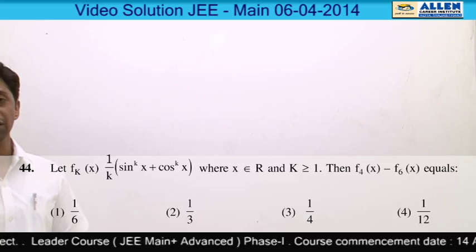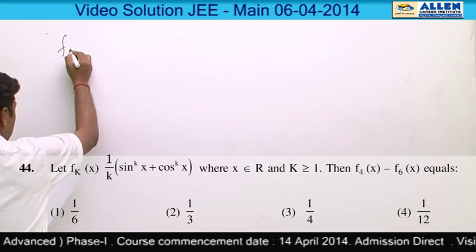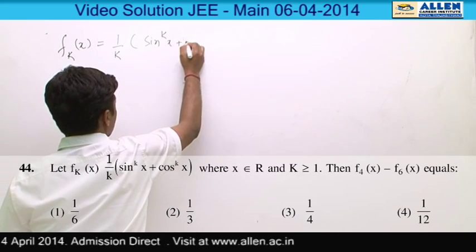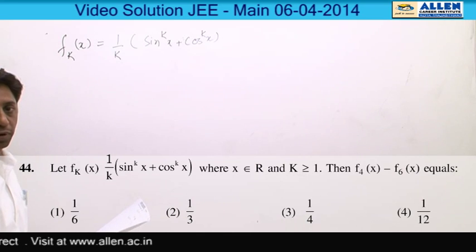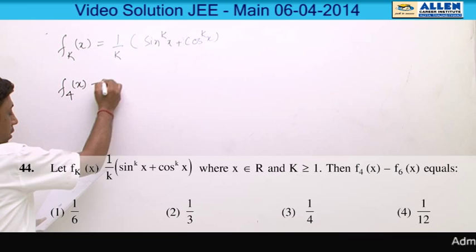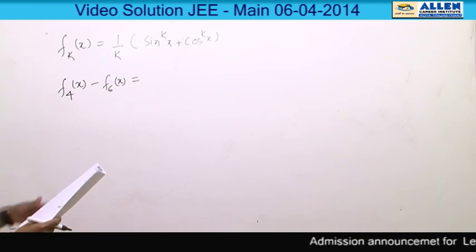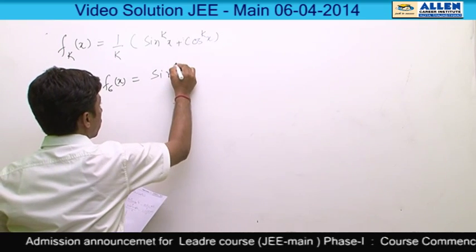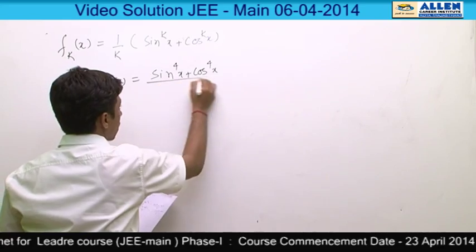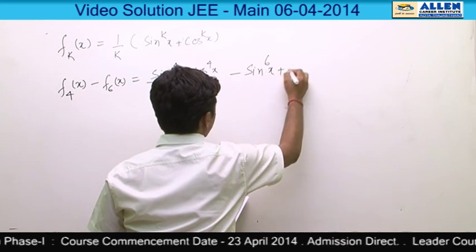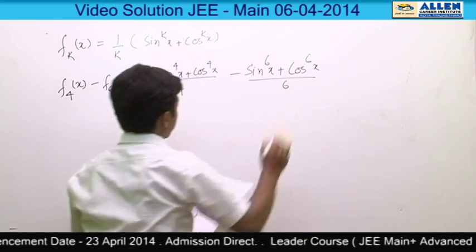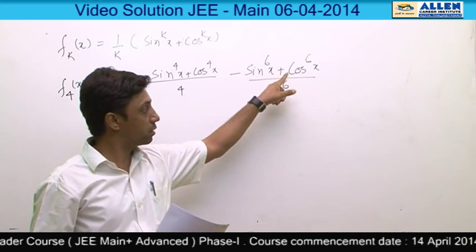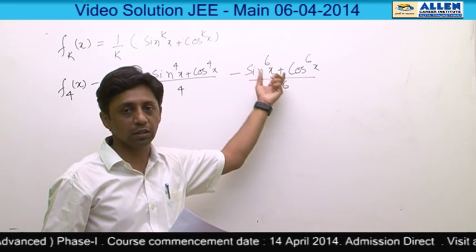Question number 44 is a straightforward question on trigonometric functions. A function is given: f(k, x) = (1/k)(sin^k x + cos^k x), and we have to find the simplified value of f(4,x) − f(6,x). We substitute k=4 and k=6, giving (sin⁴x + cos⁴x)/4 − (sin⁶x + cos⁶x)/6. Applying a²+b² = (a+b)² − 2ab and a³+b³ = (a+b)³ − 3ab(a+b).